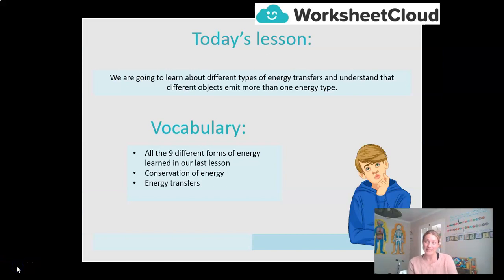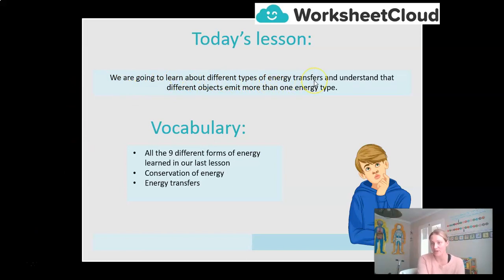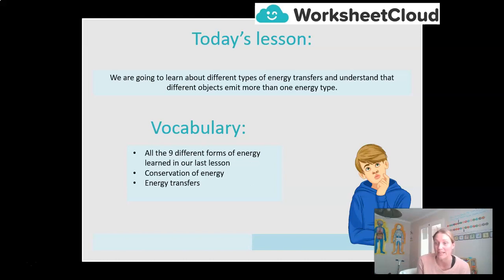So what are we going to be doing in today's lesson? Well, today we learned last lesson about the nine different forms of energy. And today we are going to look at how that energy is changed and transformed from one form into another. We're going to learn about the different types of energy transfers, and understand that different objects emit more than one type of energy. That word emit means give off or have. A light bulb doesn't just give off light energy, it also gives off heat energy.